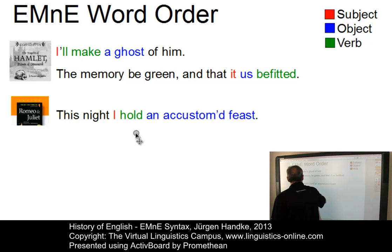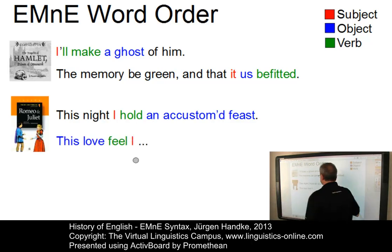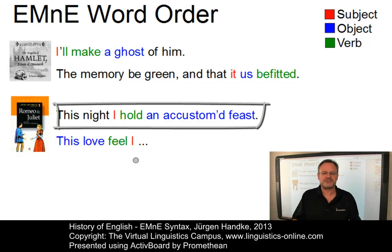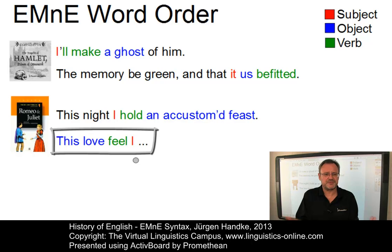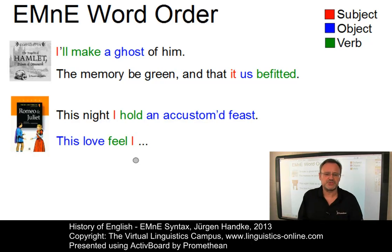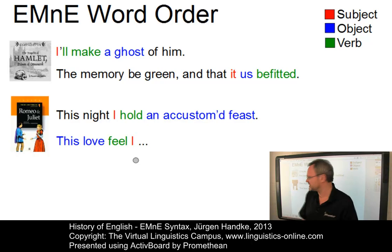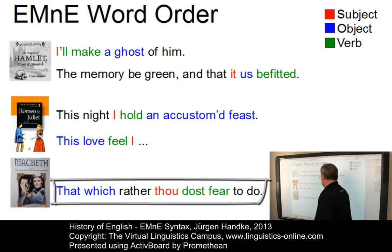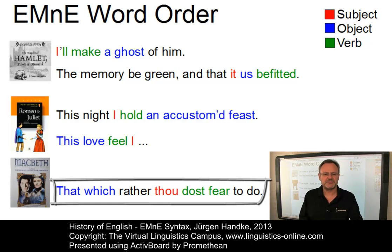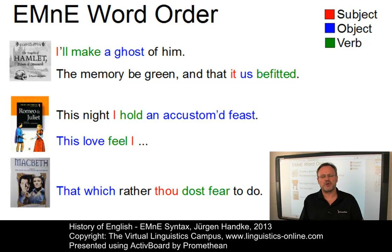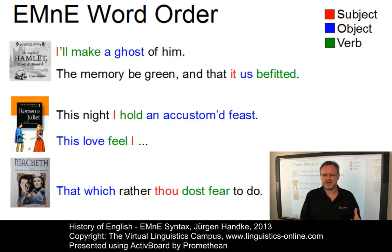Here are two further examples, this time taken from Romeo and Juliet. 'This night I hold an accustomed feast' — again, the use of the predominant word order SVO. However, 'in this love philtre' we have an OVS structure, object fronting. So subject, verb, object is used most often, but other patterns still occurred. And this is even more supported by our last example from Macbeth: 'That which rather thou dost fear to do.' Here we have an example of object, subject, verb. Word order patterns such as object, verb, subject or object, subject, verb occasionally appear in early modern English texts, but they are very rare, especially in prose.